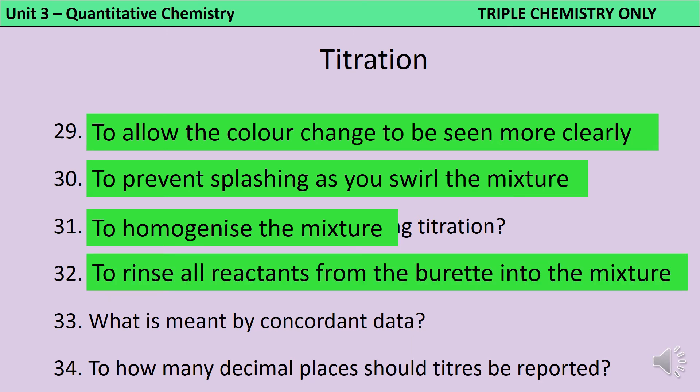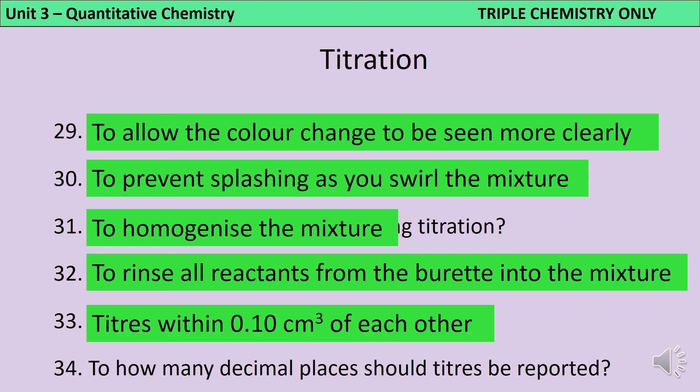Concordant data is where we have titres that are within 0.10 centimetres cubed of each other. And that gives you a little bit of a clue that titres should always be reported to two decimal places, although the second of those decimal places will always be a 0 or a 5.